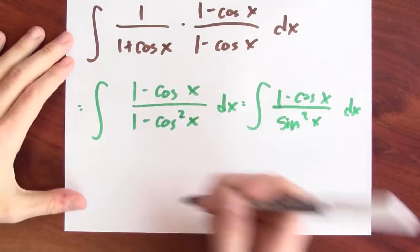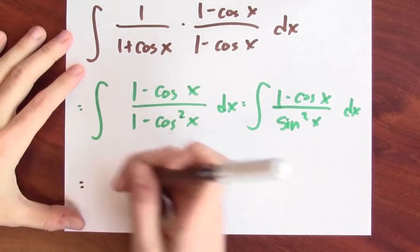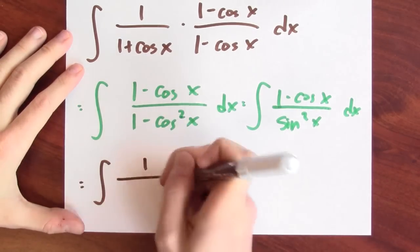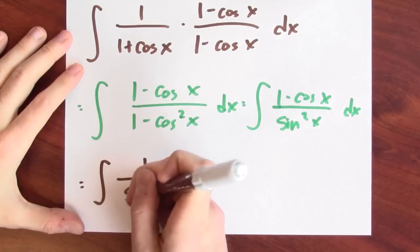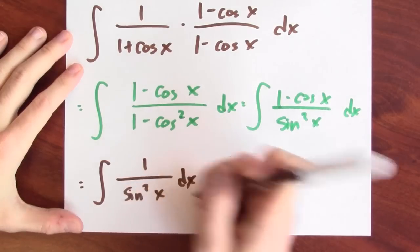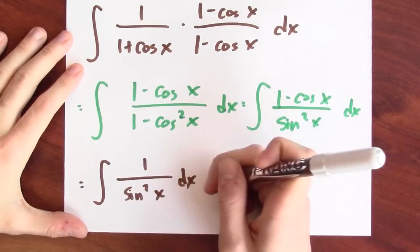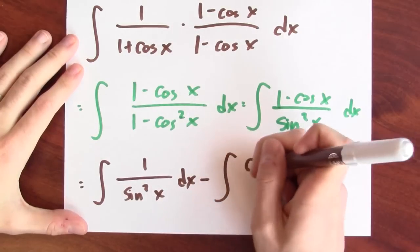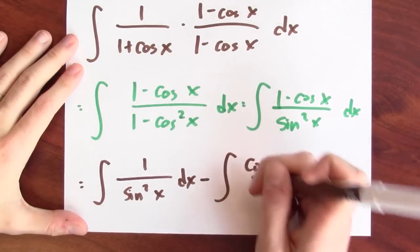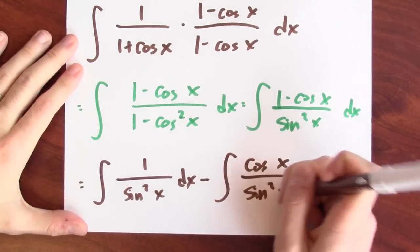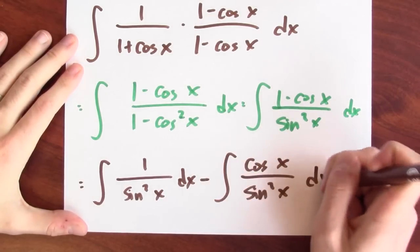Let's split it up. Then I get the anti-derivative of 1 over sine squared x dx minus the anti-derivative of cosine x over sine squared x dx.